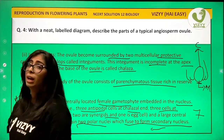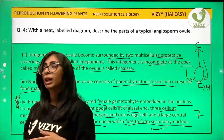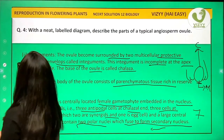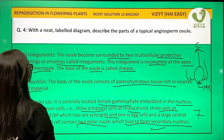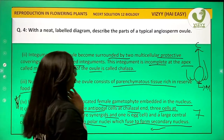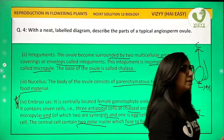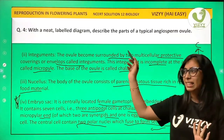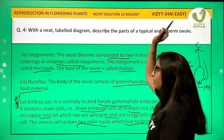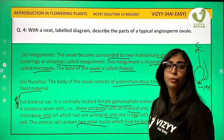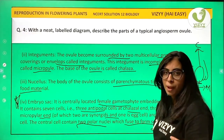So we are done with question 4. Question 4 asked for a neat labeled diagram, and we have described the four important parts of the angiospermic ovule.